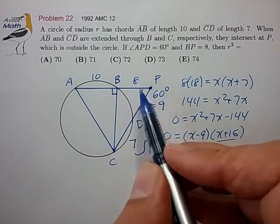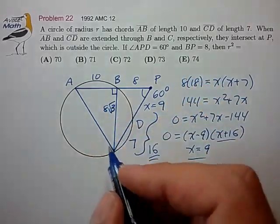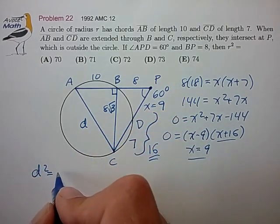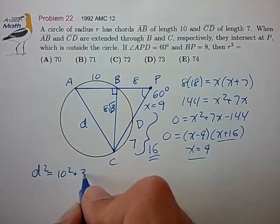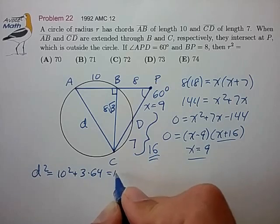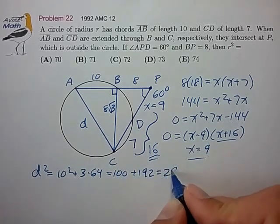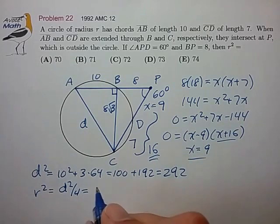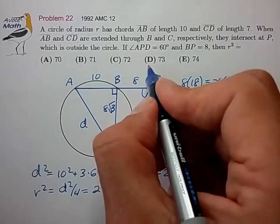So we know that this leg is 8 root 3. And now we know that the diameter squared is equal to 10 squared plus 8 root 3 squared. So that's 3 times 64, 100 plus 192, that's 292. And the radius squared is just the diameter squared divided by 4. So that's 292 divided by 4, and that's 73, which is choice D.